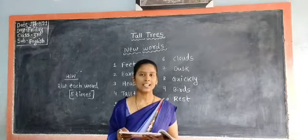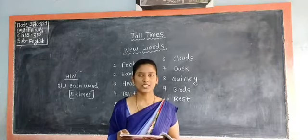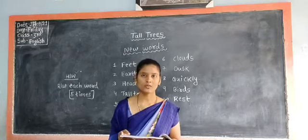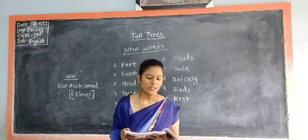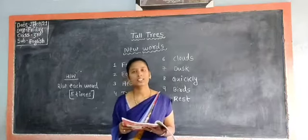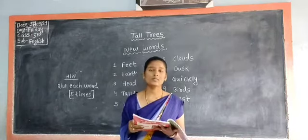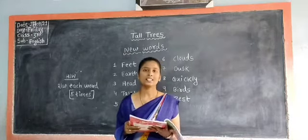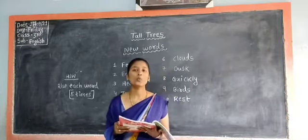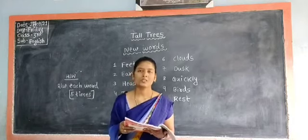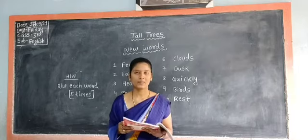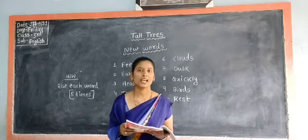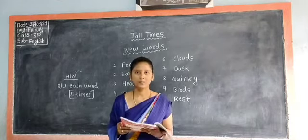As the title suggests, this poem is about tall trees. The poet describes the trees as human beings. Human beings means people like you and me.